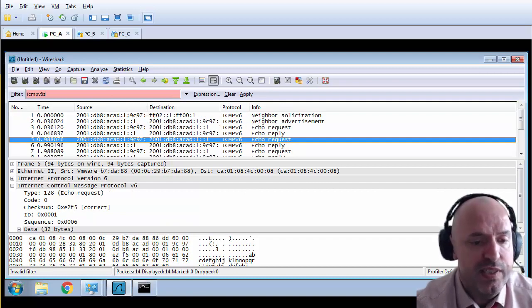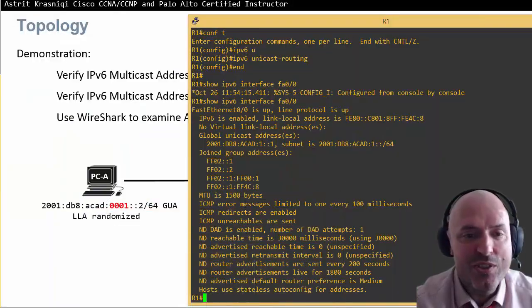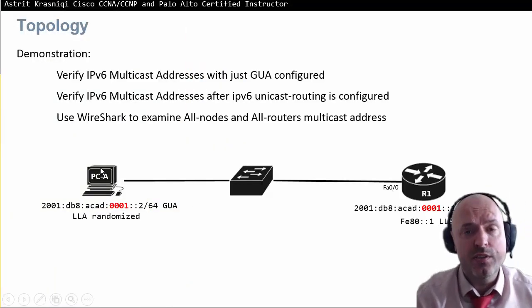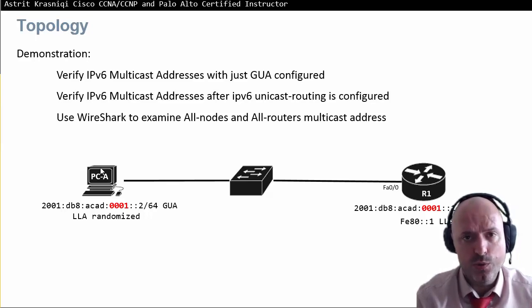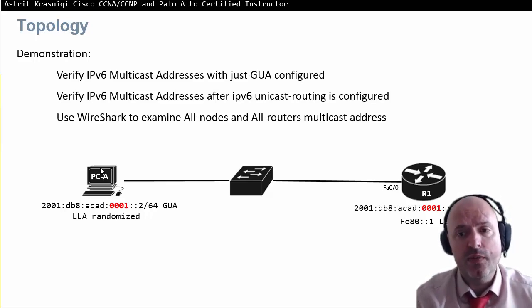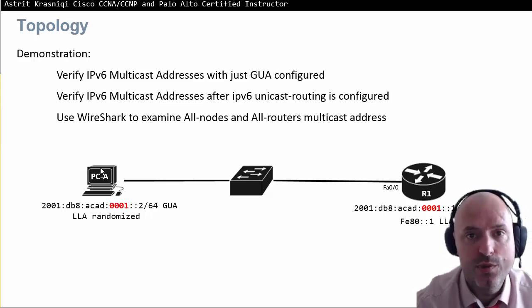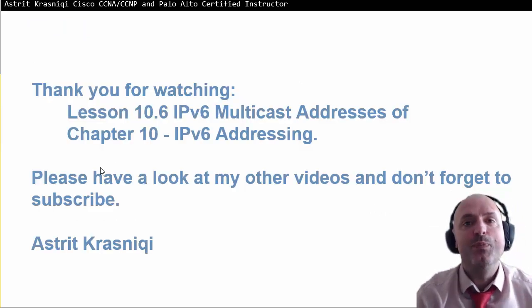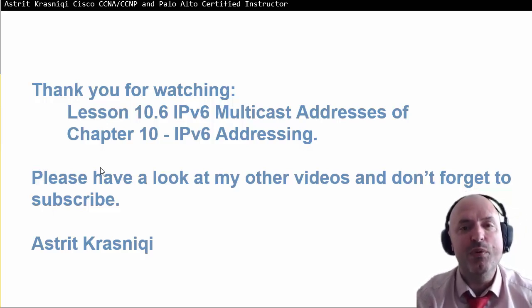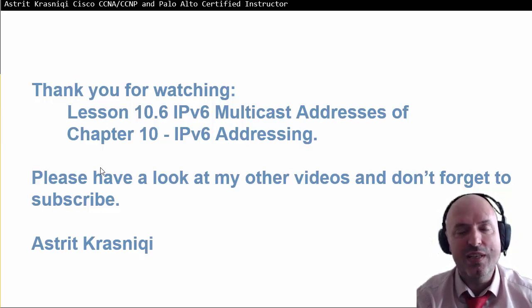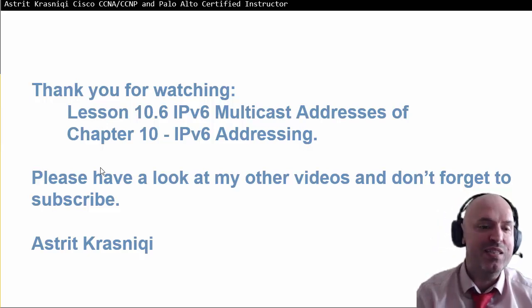To recap: we have two types of IPv6 multicast addresses. Well-known assigned addresses include FF02::1 for all nodes and FF02::2 for all routers. Then we have solicited node addresses — every IPv6 address created on an interface dynamically generates a solicited node address, used for address resolution from layer 3 to layer 2. Thank you for watching lesson 10.6, IPv6 multicast addresses, part of chapter 10 IPv6 addressing. Please check my other videos and subscribe to my YouTube channel.